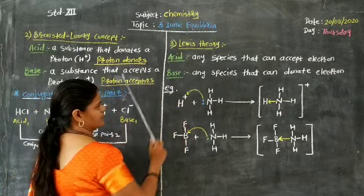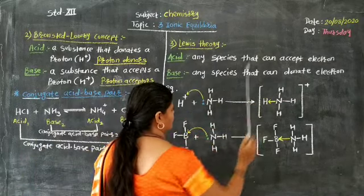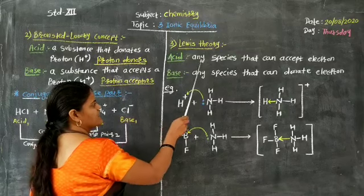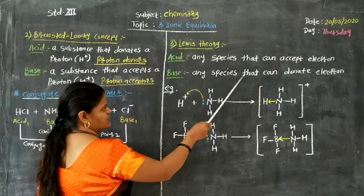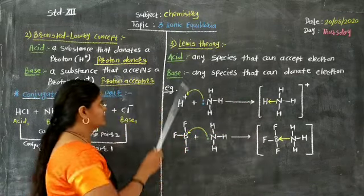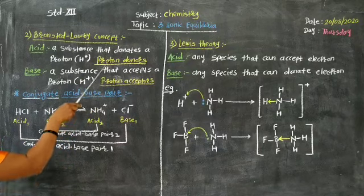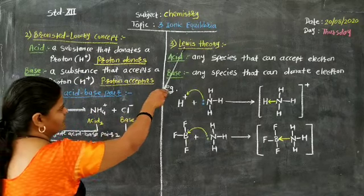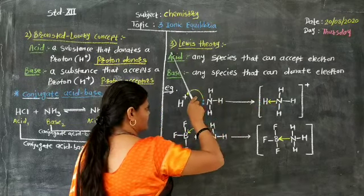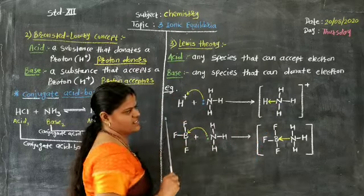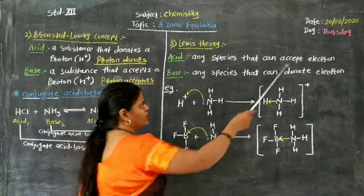You may pronounce it as Lewis concept or Lewis theory. According to this theory, an acid is any species that can accept or gain an electron, and a base is any species that can donate an electron. The key difference between Bronsted-Lowry and Lewis theory is that Bronsted-Lowry is a protonic theory based on protons, while Lewis theory is an electronic theory based on electrons. Electron acceptors are acids; electron donors are bases.